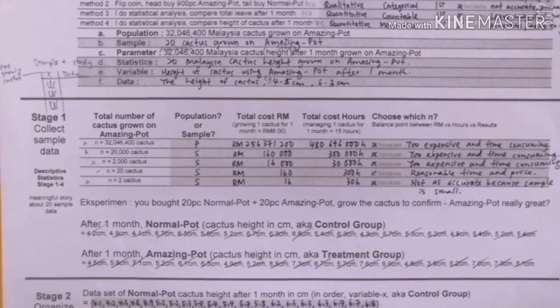For stage two, as you can see, these are the data of height in centimeters of normal pot and amazing pot.